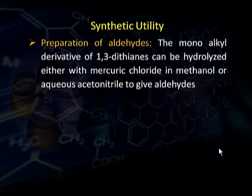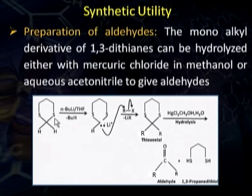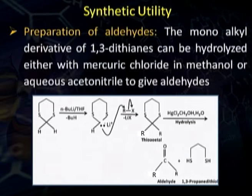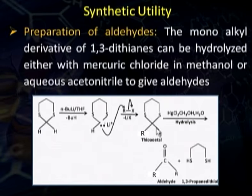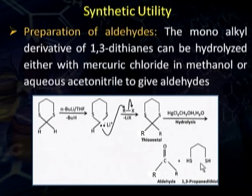From 1,3-dithiane we can prepare aldehydes and ketones — this is the synthetic utility of 1,3-dithiane. To prepare aldehydes, 1,3-dithiane is treated with a base like n-butyllithium and converted into a carbanion. This carbanion undergoes nucleophilic substitution upon treatment with RX, giving a thioacetal. This thioacetal upon hydrolysis with mercuric chloride in methanol or aqueous acetonitrile produces one molecule of aldehyde and one molecule of propanedithiol. By this method we have prepared an aldehyde.